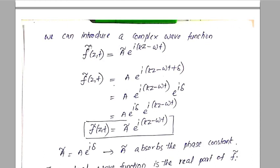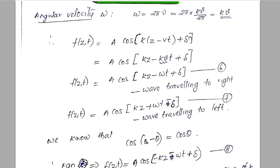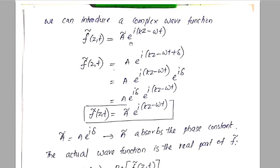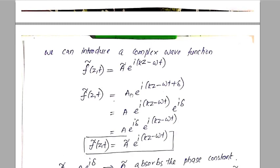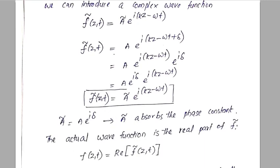The complex wave function is defined as f-tilde of z, t equal to A-tilde times e raised to i(kz minus omega·t). Here A-tilde equals A·e raised to i·delta, which is the complex amplitude absorbing the phase constant delta. So f-tilde of z, t equals A-tilde·e raised to i(kz minus omega·t), which is both real and imaginary parts combined.